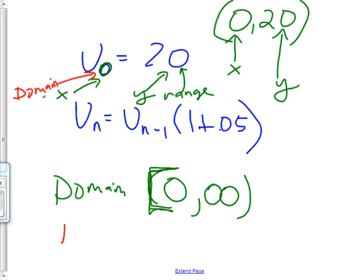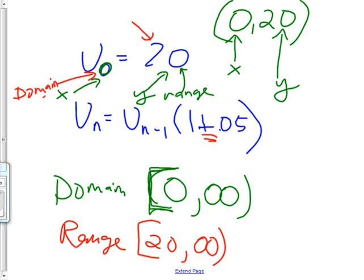Range. The range is from what's the smallest that it'll ever be? 20. Because it's only going up, right? So it goes from 20, which it can be, so I use a bracket, all the way up to what's the biggest it could ever be theoretically? Infinity. And a curve. All right. It's about lunchtime.